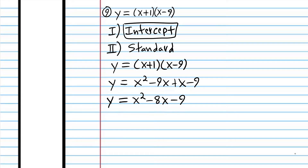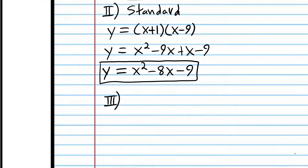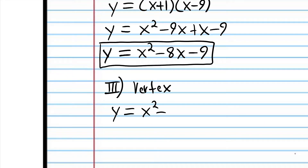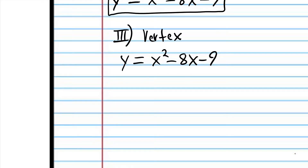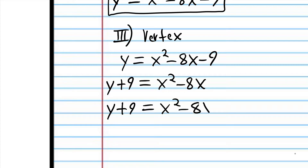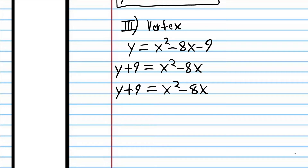Now we're going to convert to vertex form — the form that requires a little more thought. I'll pick up where we left off in standard form. We have to complete the square to put it in vertex form. There's no coefficient of x squared, so we don't have to eliminate that step. I'll take the 9 and put it on the other side, then we're ready to complete the square. Negative 8 divided by 2 is negative 4, and negative 4 squared is 16. So let's add 16 to both sides.